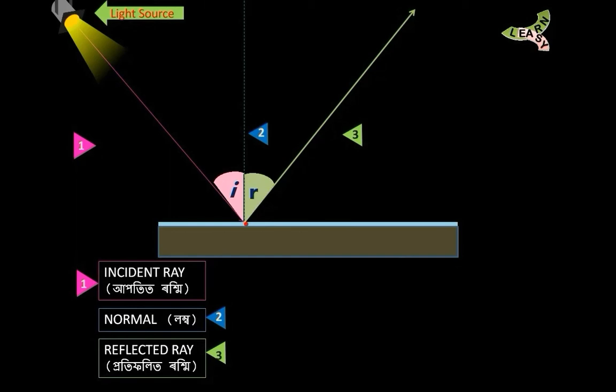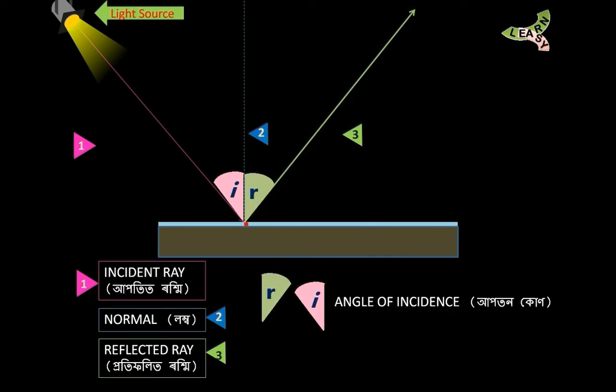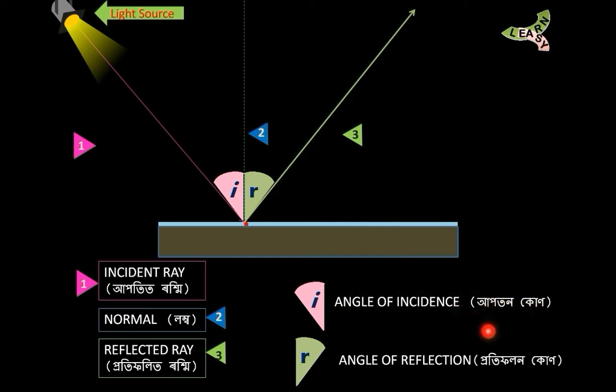The angle between the incident ray and the normal is called the angle of incidence. The angle between the reflected ray and the normal is called the angle of reflection.